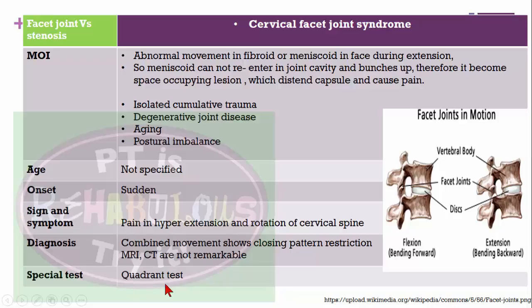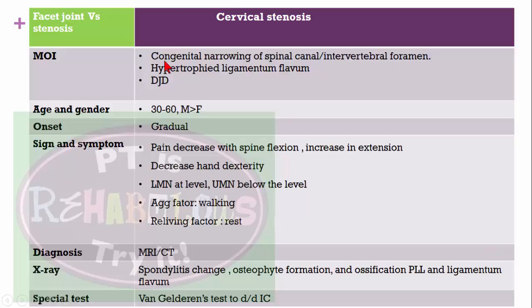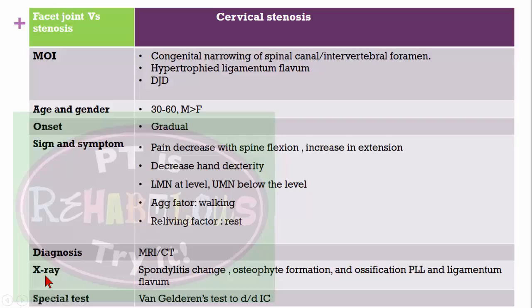Cervical stenosis involves congenital narrowing of the spinal canal or intervertebral foramen, hypertrophy of the ligamentum flavum, or degenerative joint disease. It is more common in males, especially aged 30 to 60 years, with gradual onset. Signs and symptoms include pain that decreases with spine flexion and increases with extension, as flexion opens the foramen while extension narrows it. Patients also have decreased hand dexterity, lower motor neuron signs at the level of lesion, and upper motor neuron signs below.